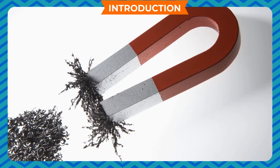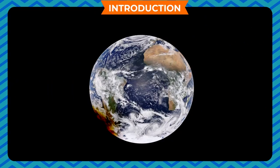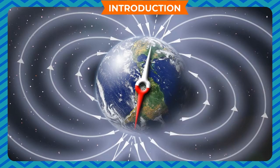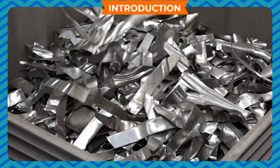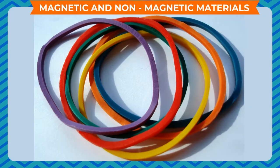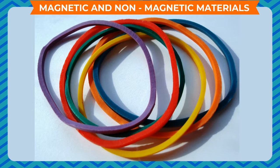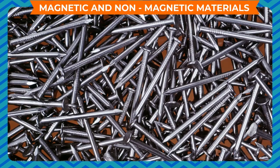A magnet attracts iron or aligns it in the north-south direction. It is considered that our earth is a huge magnet with north and south magnetic poles which attracts natural magnets and iron pieces towards itself. Magnetic and non-magnetic materials: collect a few items such as an iron nail,